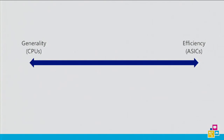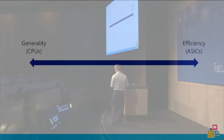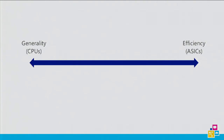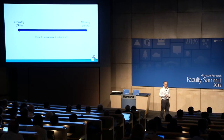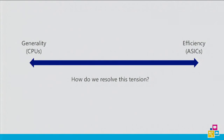The challenge is that in the logic specialization space, you have efficiency on the far right — ASICs at the extreme — and generality, what we think of as CPUs, on the far left. Going from left to right: CPUs, then multi-core CPUs, then many-core CPUs, then GPUs, then FPGAs, then ASICs. The farther right you go, the less general you get, the more work it is to map, but the more efficient you get. This tension is not something we know how to resolve today, but we need to make progress.